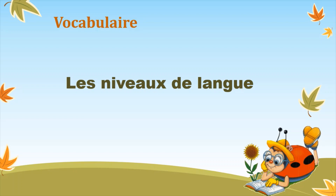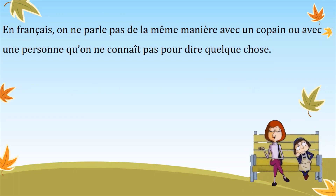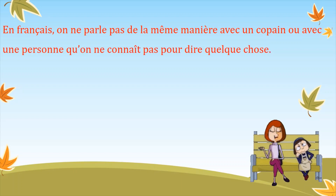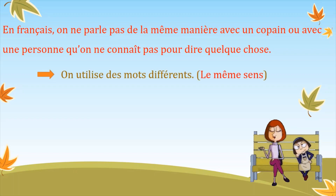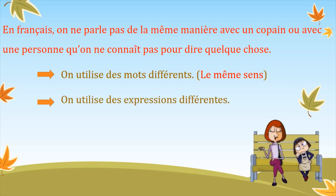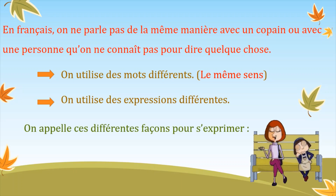Les niveaux de langue. En français, on ne parle pas de la même manière avec un copain ou avec une personne qu'on ne connaît pas pour dire quelque chose. Ça veut dire qu'on utilise des mots différents, mais ils ont le même sens. Ou encore, on peut utiliser des expressions différentes. On appelle ces différentes façons pour s'exprimer les niveaux de langue.